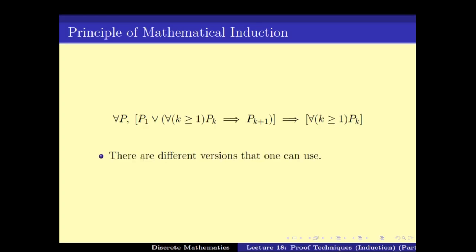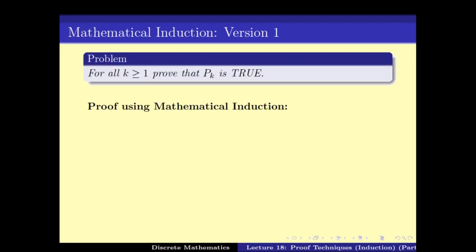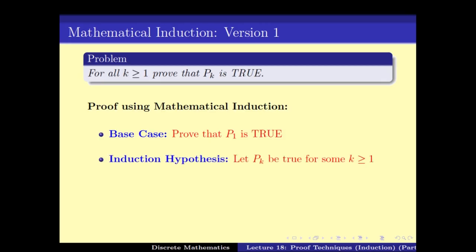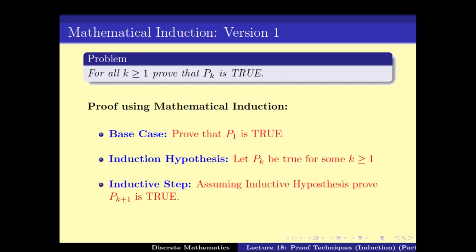There are different versions of this principle. Version 1 is the case we just discussed: to prove that for all k greater than or equal to 1, Pk is true, we first prove P1 — this is the base case. Then we have the induction hypothesis which says let Pk be true for some k, and the inductive step is: assuming the induction hypothesis is true, prove that Pk+1 is true.